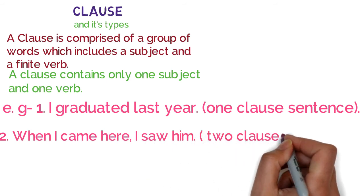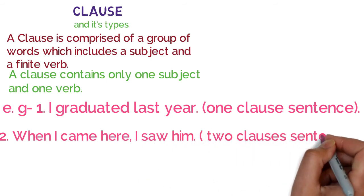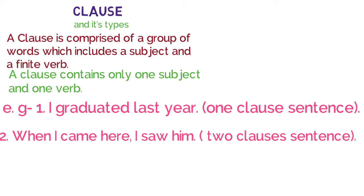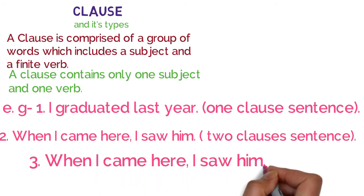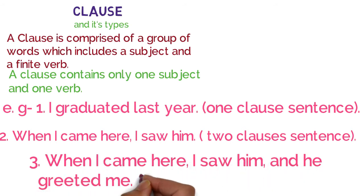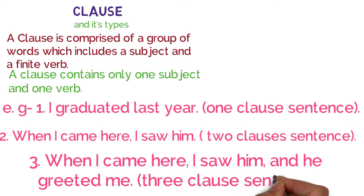Now let's see the second example: 'When I came here, I saw him' — jab mein yehaan aya, meinne unko dekha. Is sentence mein two subjects aur two verbs hain, is liye ye two clauses sentence hai. Next example: 'When I came here, I saw him and he greeted me' — is sentence mein three clauses hain.